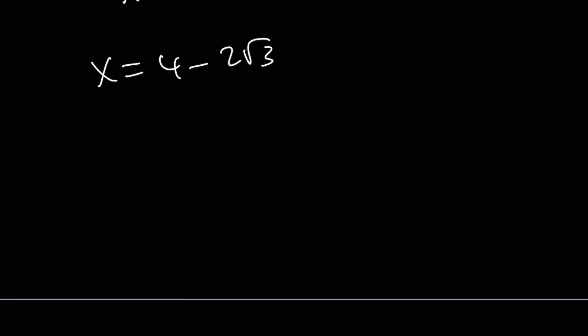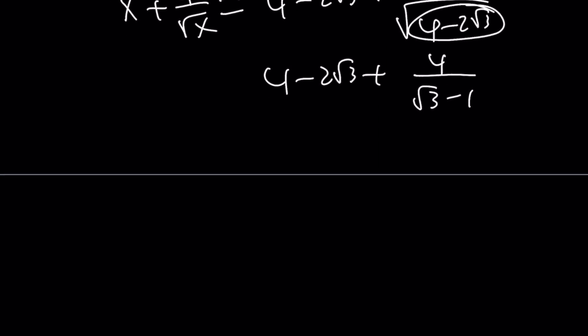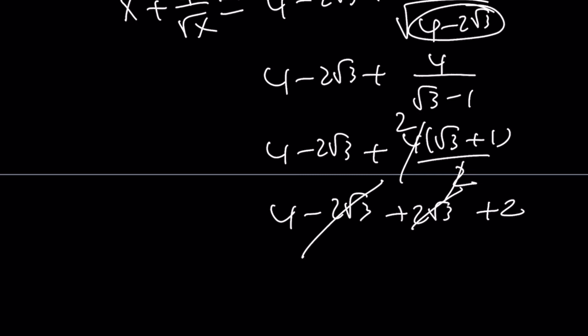If you introduce that into the expression x plus 4 over root x, you're going to get the following. 4 minus 2 root 3 plus 4 over the square root of 4 minus 2 root 3. That's 4 minus 2 root 3 plus 4 over root 3 minus 1. Then 4 minus 2 root 3 plus 4 times root 3 plus 1 over 2. And then we get 4 minus 2 root 3 plus 2 root 3 plus 2. 2 root 3s cancel out, and we end up with 4 plus 2, which is equal to 6. We got the right answer with the right approach.